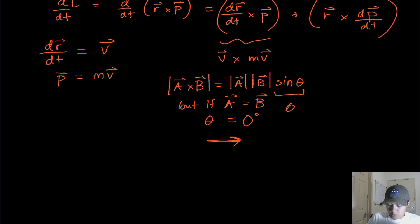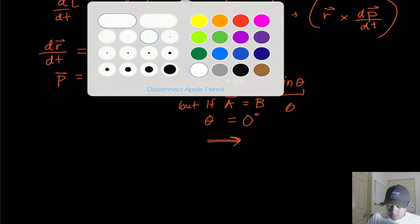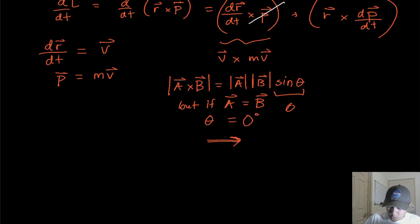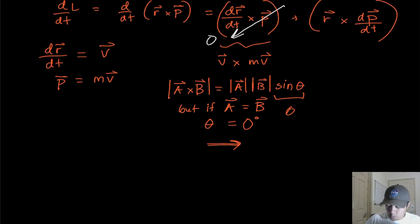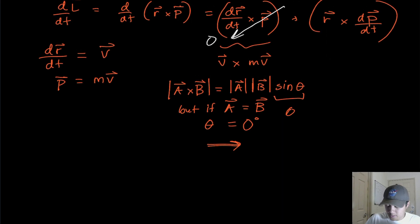So what we've just shown is that this first term goes to zero because we have a vector that's proportional to itself. So that's good, I suppose, if we want to prove this. So the next part we're going to show is this one. We're going to show that this is going to be zero.